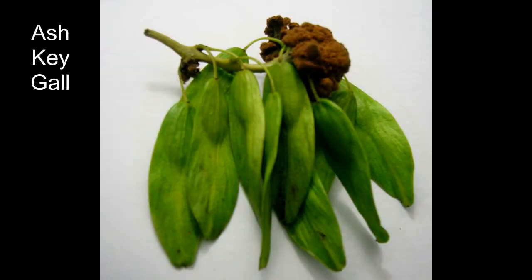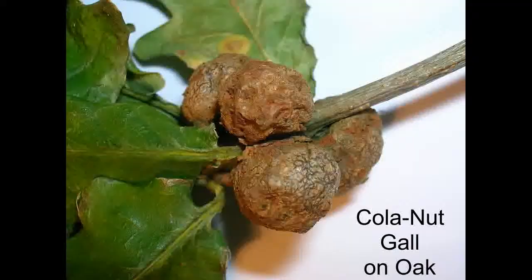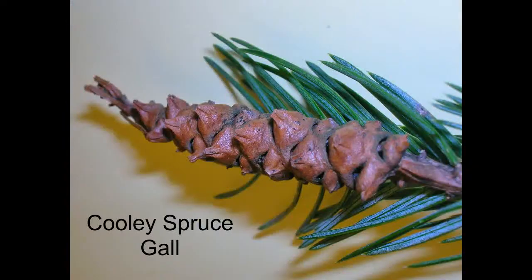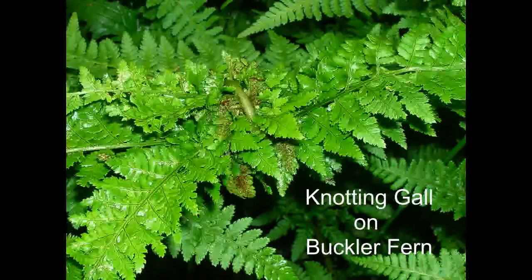Sometimes they are very useful, like the well-known root nodules found on clover. They fix nitrogen from the air and help the plant considerably. They are also peculiar in that the red colour is haemoglobin, the same substance as found in human blood — part of it is made by the bacterium within the nodule and part by the clover plant.